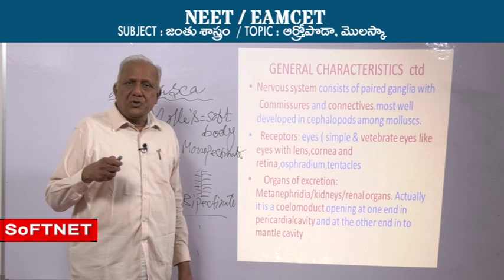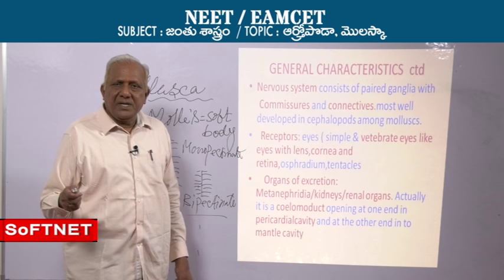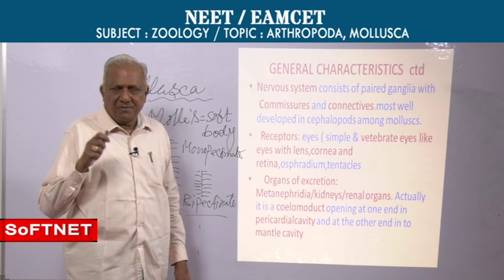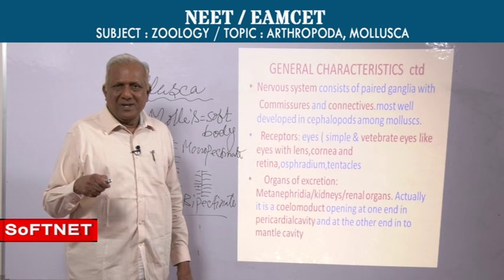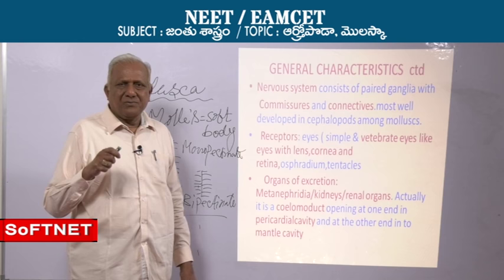You have to remember: a commissure is a nerve that joins similar ganglia, like the cerebral commissure. A connective is a nerve that joins dissimilar ganglia — cerebro-pleural connective, cerebro-pedal connective, pleuro-pedal connective — like this. Then, receptors.